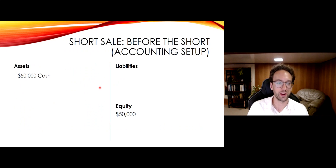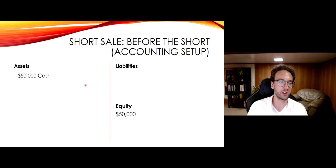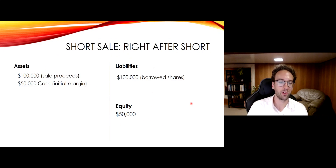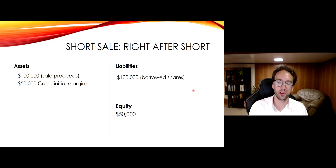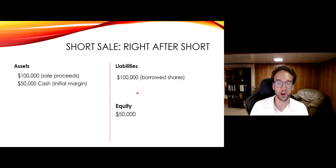Let's crack open a simplified balance sheet here to explain. We start with $50,000 in cash, no liabilities, so our equity is $50,000. We borrow $100,000 of stock and sell it — and that happens simultaneously if you actually do this at your brokerage. So we get $100,000 more of cash, giving us $150,000 cash total. Now we also have this $100,000 liability. So our equity is $150,000 in assets minus $100,000 liability — our equity is still $50,000. Our equity hasn't changed.